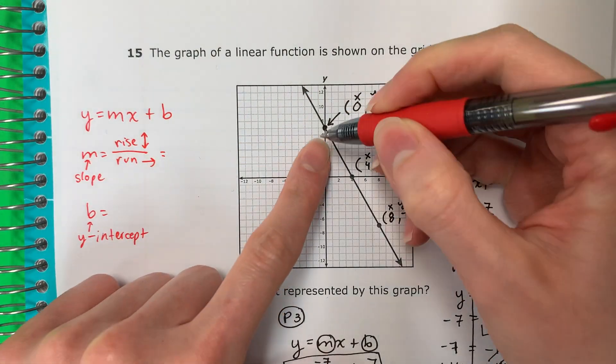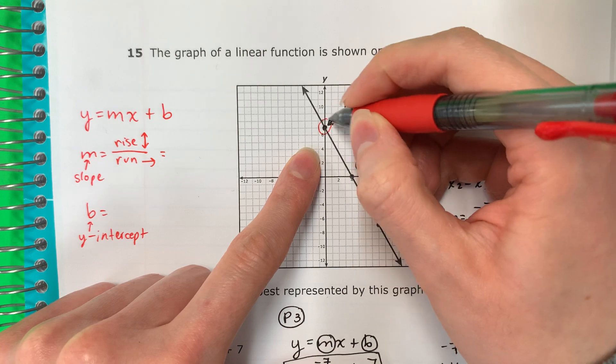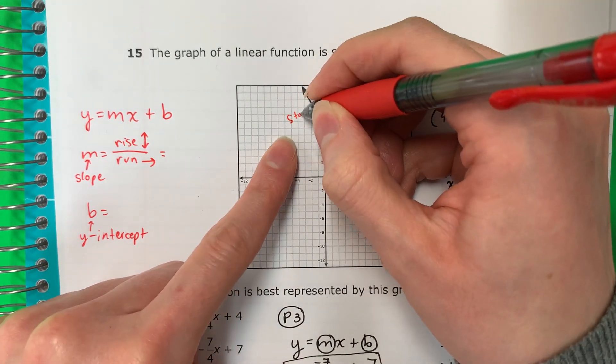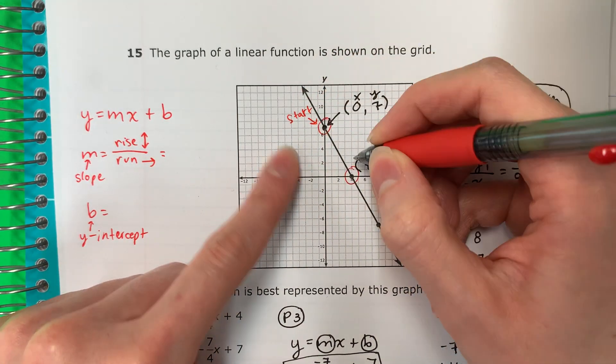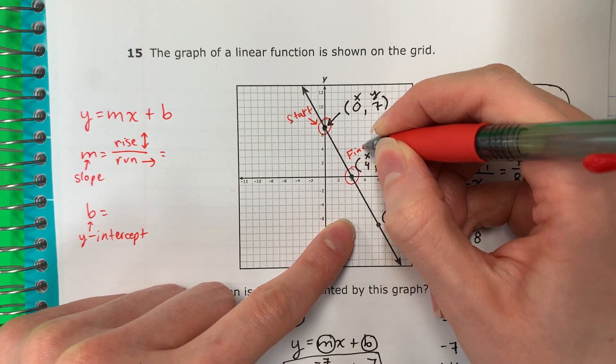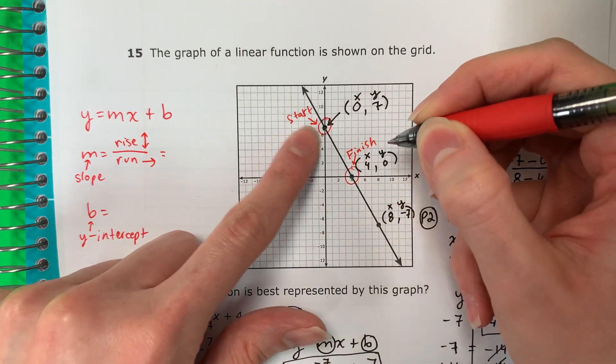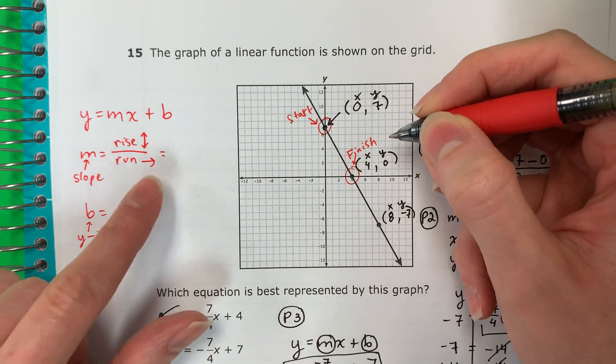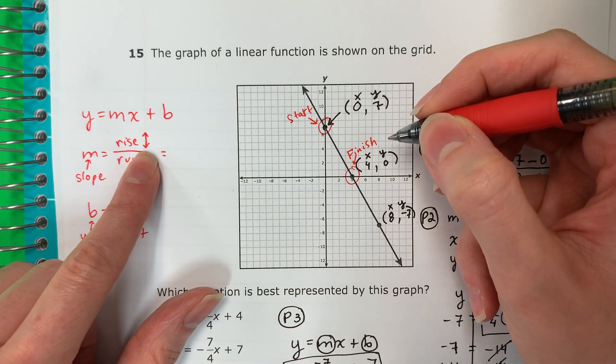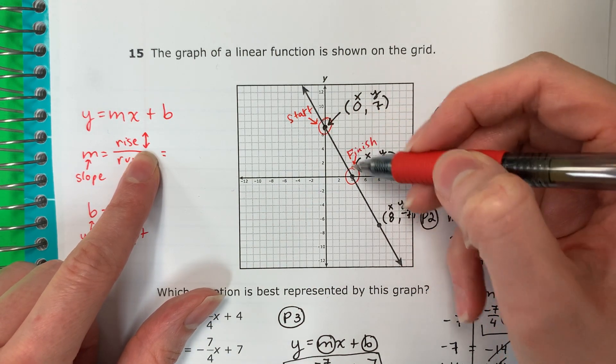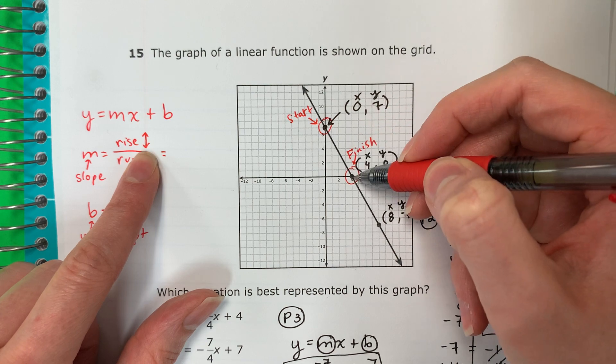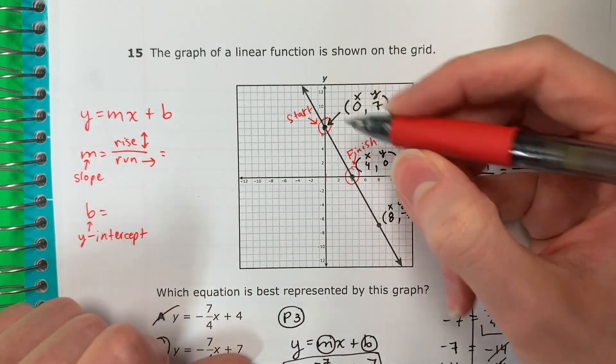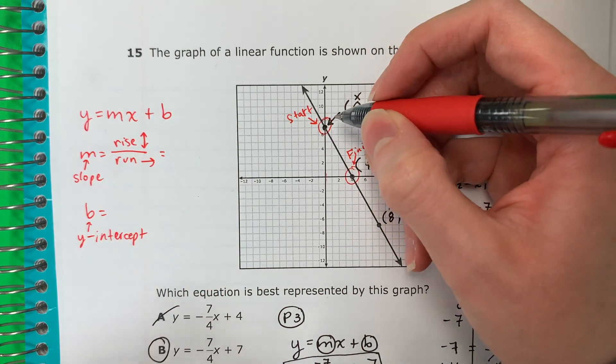So you're going to pick a point. I'm going to start on the left. I'm going to use this one and this one. This is where I start. You start on the left. Finish on the right. First is up, down. I'm going to start here. I want to finish here. So I need to go down. Let's count how many.